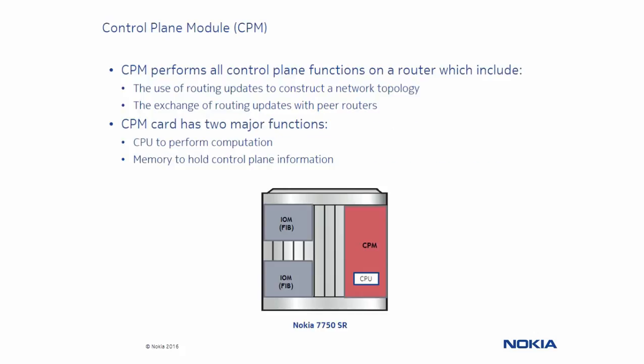Let's talk about the CPM. The CPM is considered the brains of the Nokia 7750 service router and it is used to exchange routes to construct a network topology, referred to as the forwarding information base or FIB. The CPM downloads the FIB to each input-output module which is then used to perform data forwarding. The CPM also maintains states for multiple internal and external processes — an example would be BGP neighbor states and OSPF adjacency states.